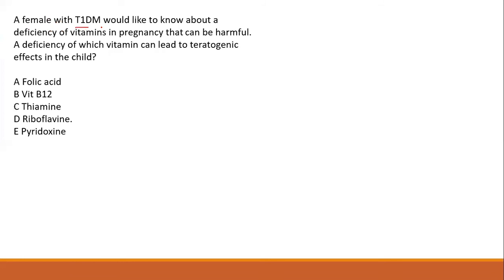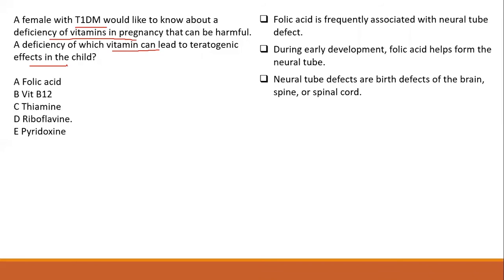A female with type 1 diabetes mellitus wants to know which vitamin deficiency can cause teratogenic effects in pregnancy. The answer is folic acid. Folic acid is involved in neural tube formation, and its deficiency leads to neural tube defects — affecting the brain, spine, or spinal cord. The answer is A — folic acid.